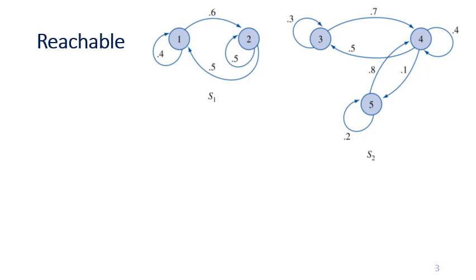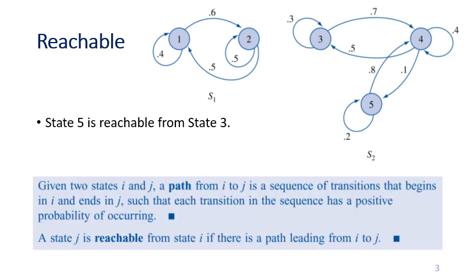Let's start with the first term: reachable. Looking at the example, we can say that state 5 is reachable from state 3. This is the case because there is at least one way that will lead you from 3 to 5. The formal definition is that a state j is reachable from state i if there is a path leading from i to j.